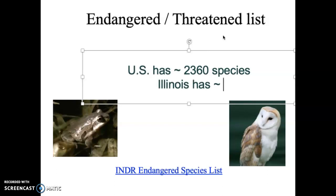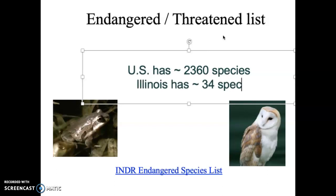What happens if those 2,360 species do go extinct? How many other species will feel that ripple effect, leading to their extinction? Think of it like car parts that have to be replaced — if they break or stop working, what does that do to the rest of the functionality of your vehicle? Now in Illinois alone, we have 34 species that are currently listed.